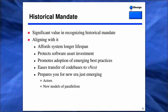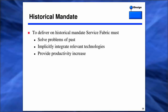There is significant value in recognizing the historical mandate. That's why we're exploring the origins of the fabric — because if you can align with it now, you can give your systems a longer lifespan. From the business perspective, it protects the investment of your software assets, promotes emerging best practices, and eases the transfer of your code and systems to vNext. Part of this is also getting ready for the new era that is just emerging: actors, as we mentioned, and new models of parallelism. We can now take a look at the service fabric and see if it actually delivers on this historical mandate — it has to solve the problems of the past, implicitly integrate relevant technologies, and provide clear productivity increases.